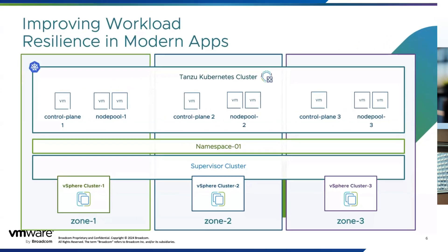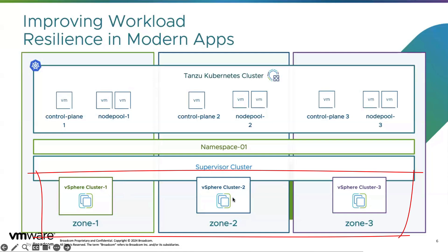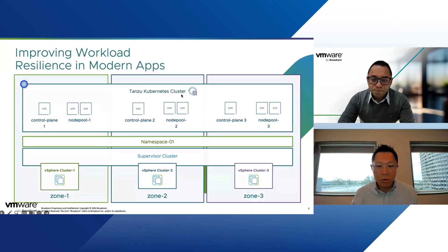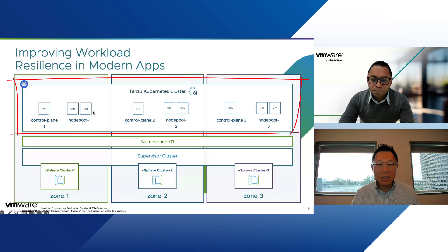On screen you can see three clusters: vSphere cluster one, two, and three, classified into different zones — zone one, zone two, zone three — very similar to availability zones. You could have different clusters in different racks in your data center, where rack one is a vSphere cluster by itself and rack two is another. For rack resiliency, you create your clusters that way, and therefore your supervisor clusters can also be designed to be spread across those clusters. Likewise, Tanzu Kubernetes clusters also have multiple replicas of control plane and worker nodes, which you may also want to spread across different zones, achieving higher resiliency.